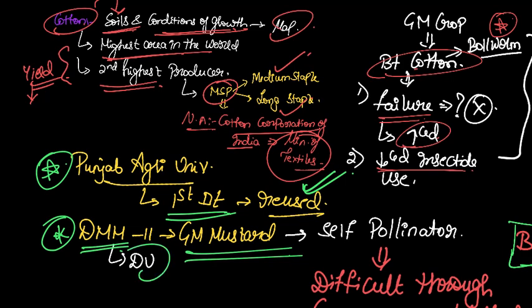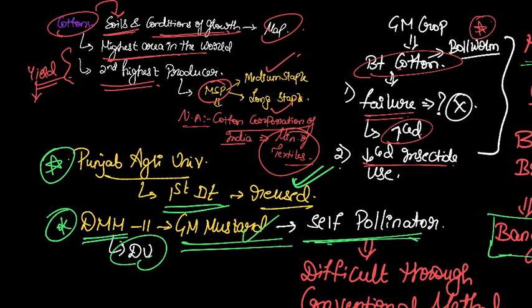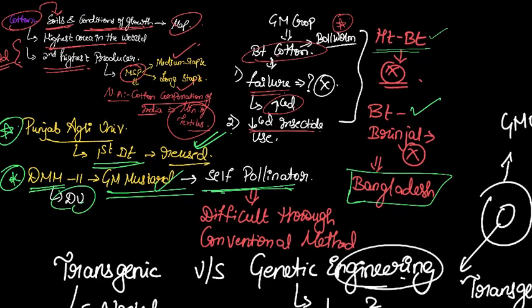Similarly, another genetically modified crop - DMH-11, which is a GM mustard variety created by the Delhi University. The reason why we have to go for this genetical method is because the conventional methods are very difficult, because self-pollination is the nature of production or reproduction for mustard. So it is difficult to go through the conventional methods.